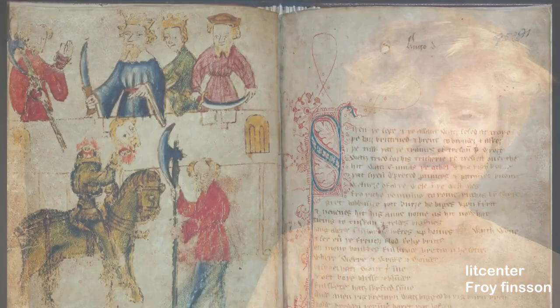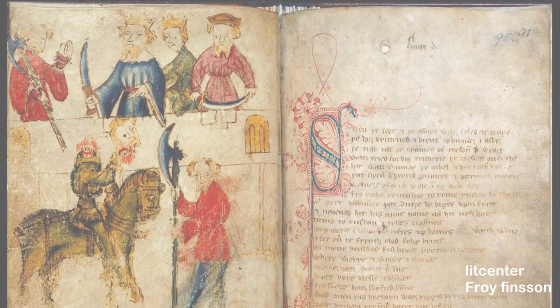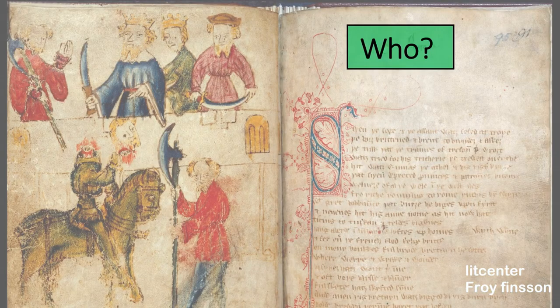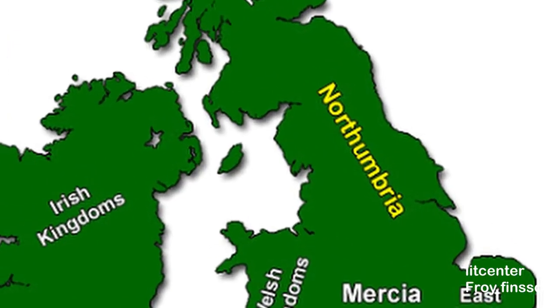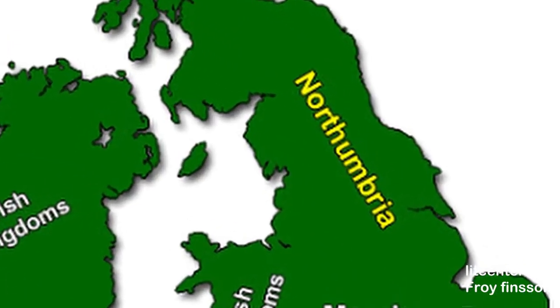Hello everyone, my name is Froy and in this video we will talk about Sir Gawain and the Green Knight. We don't know who wrote Sir Gawain and the Green Knight, so he's usually referred to as the Gawain poet. We do think that the poet lived somewhere in Northumbria in the north of England because of the northern dialect he used.